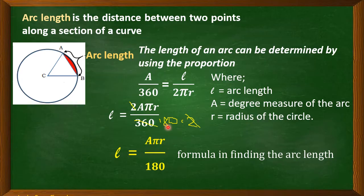In our denominator, we only have 180. So, instead of using this one because this is quite long, I give this derived formula already to you for your guidance. So, we will be using this formula in finding the arc.